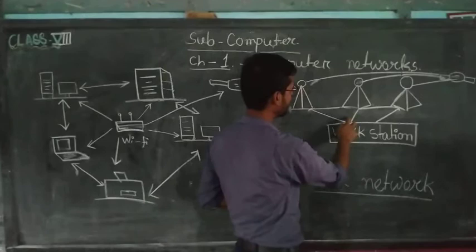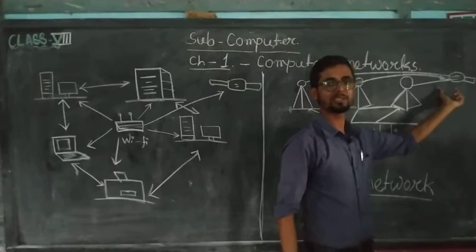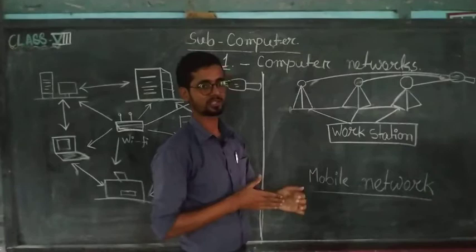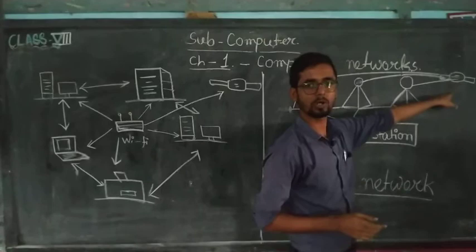So in this way, the other thing is main satellite. The role of main satellite also is there. What the satellite usually does? This satellite shares the information or the data to this tower and between this work station. So this satellite also is a main part of this mobile network.